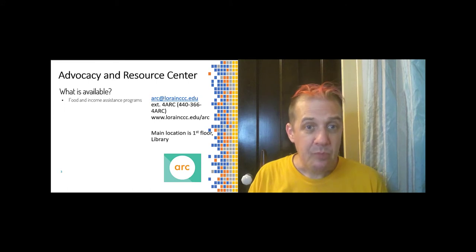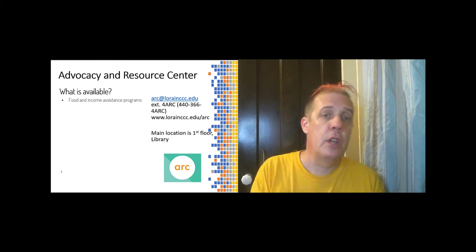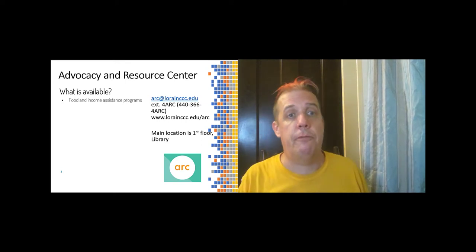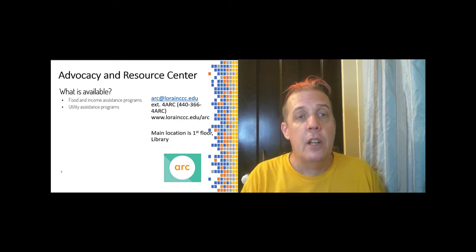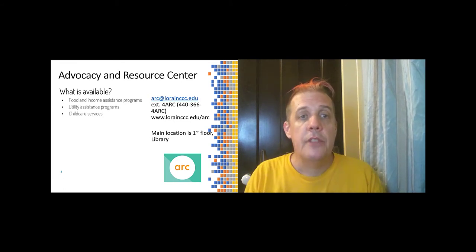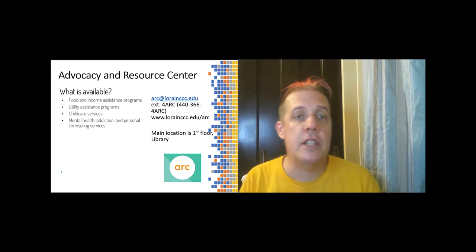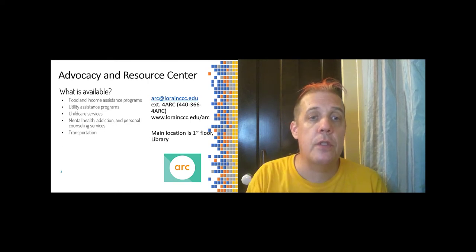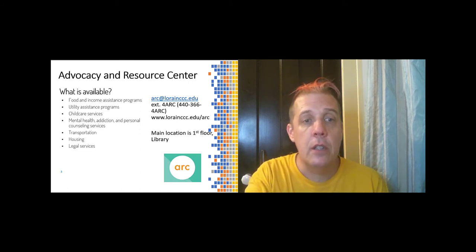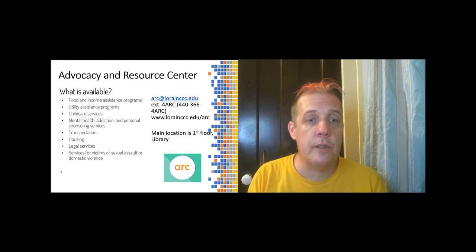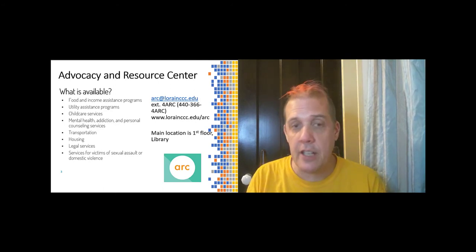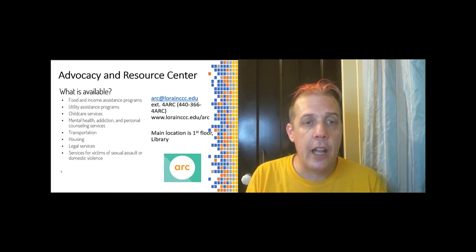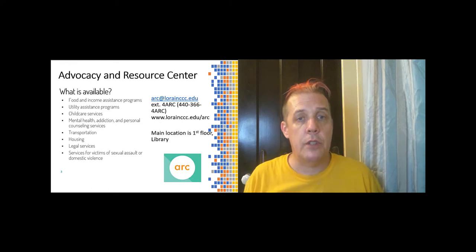For instance, there are food and income assistance programs, the Commodore Cupboard food pantry, utility assistance programs, childcare services, mental health, addiction and personal counseling services, transportation assistance including gift cards for gas money, assistance with housing, legal services, and services for victims of sexual assault or domestic violence. In a pandemic era, a lot of people are finding that they need help and maybe they weren't expecting that they needed help, but help is available from the advocacy and resource center.